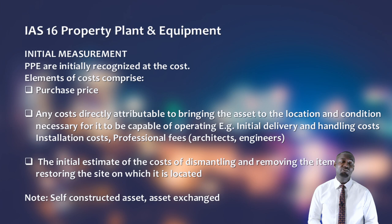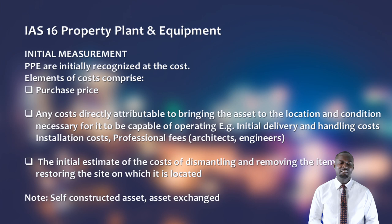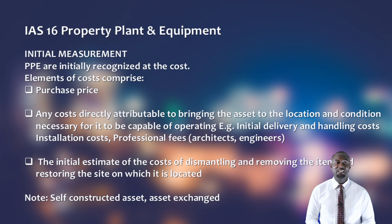You should also note that for self-constructed assets, or assets exchanged for another, we may not necessarily have all these elements of cost. To summarize: the initial cost of a PPE comprises three components — the purchase price, any directly attributable costs to bring it to its intended use or location, and the initial estimate of dismantling, removing the item, and restoring the site on which it is located.